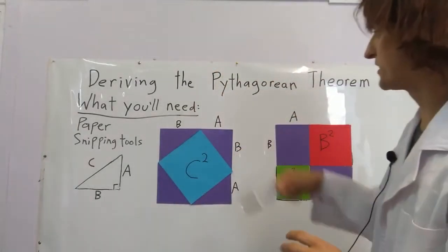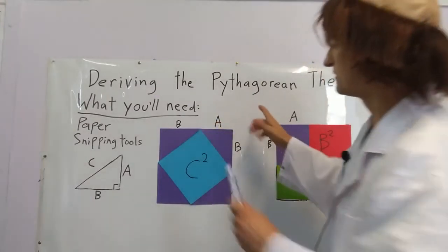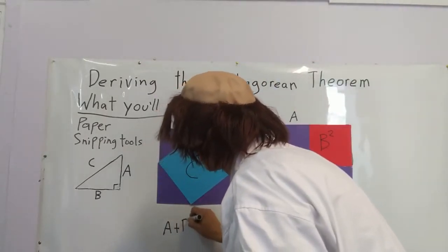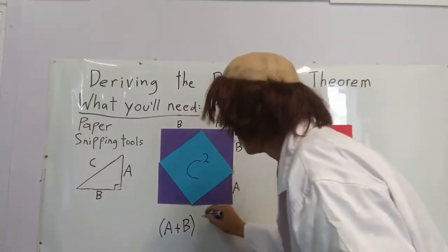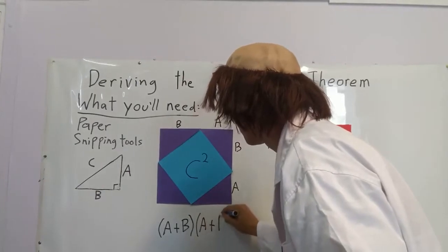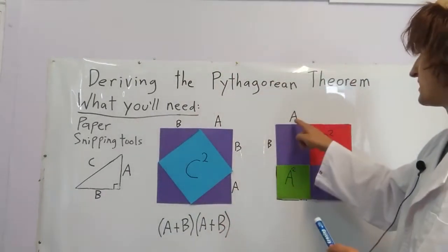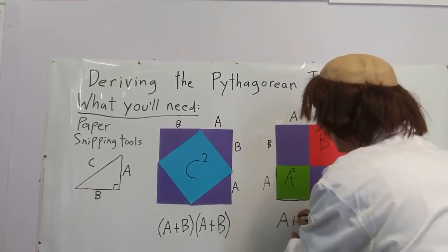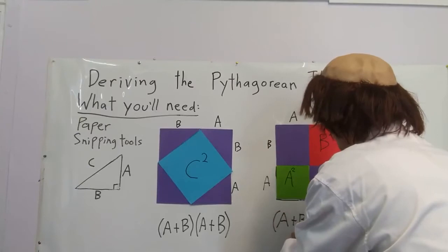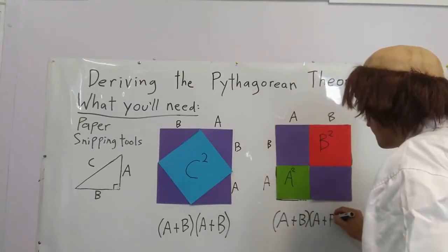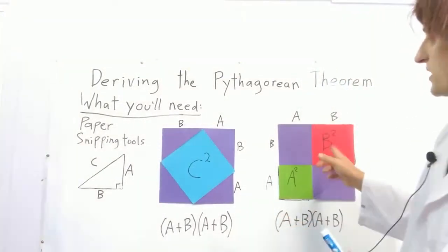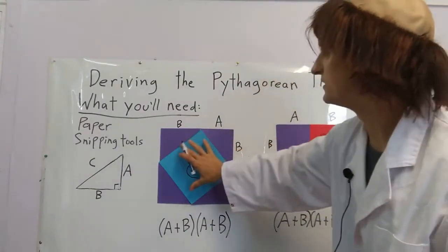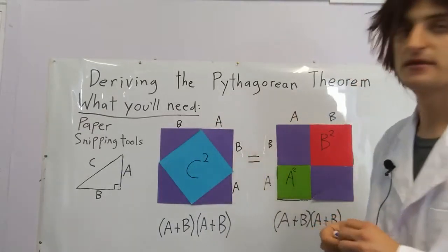Now let's compare these squares. What are the dimensions? The height, as you'll see, is A plus B. And the width is A plus B. Now on this one, we have an A, a B, an A and a B. You'll notice they have the same dimensions: A plus B times A plus B. These squares have the same area, so we'll put an equal sign right here. This square equals that square. They are the same.